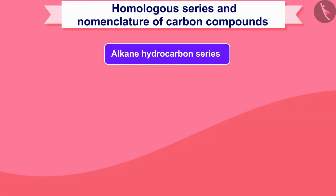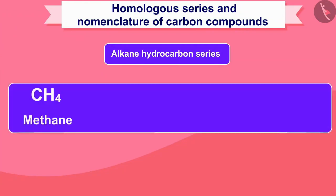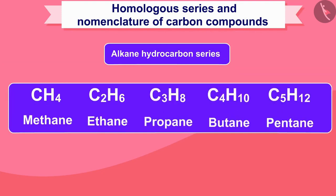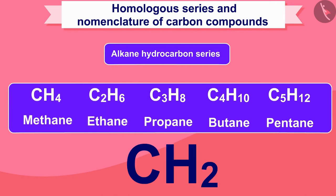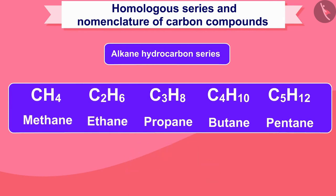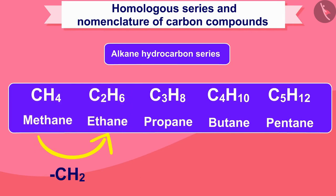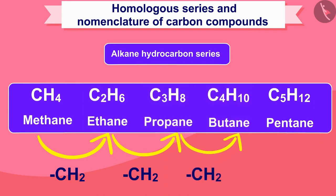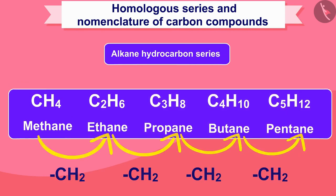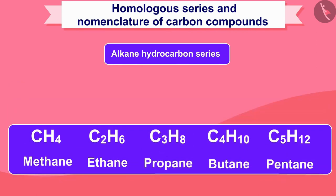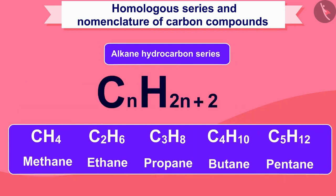The alkane hydrocarbon series is: methane, ethane, propane, butane, pentane, etc. In moving from one unit to another, there is a difference of CH2 unit. For example, there is a difference of CH2 from methane to ethane, from ethane to propane, propane to butane, and butane to pentane. We can represent any compound in this category by the formula CnH(2n+2). This also means there is a difference of 14 mass units between one member and the next, since the mass of CH2 is 14.